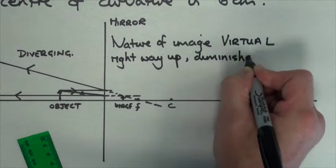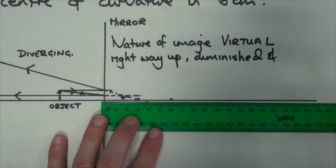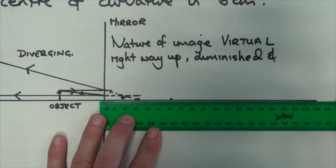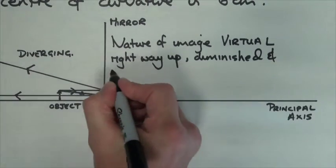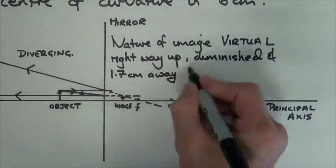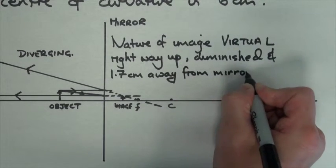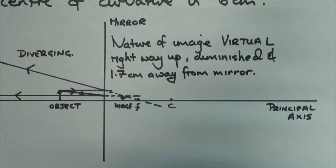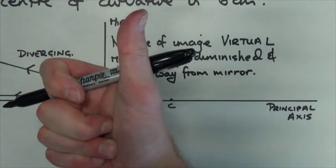It's diminished, i.e. it's smaller than the object, and its distance behind the mirror is 1.7 centimeters. So that has concluded our convex mirror. Thanks for watching.